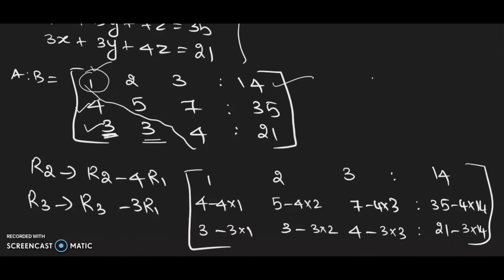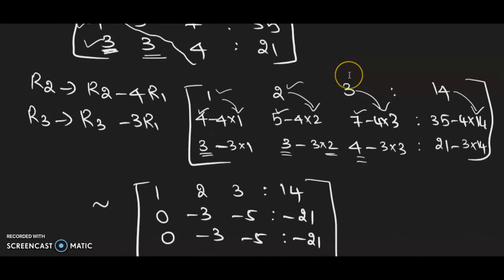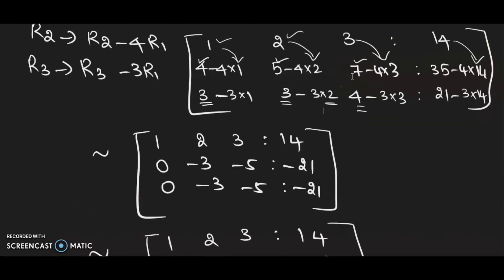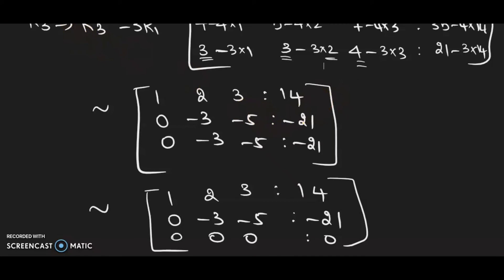Computing R2 − 4R1: take each element of R2, which is [4, 5, 7], minus 4 times each element of R1 [1, 2, 3, 14], and simplify. Similarly, compute R3 − 3R1: take R3 elements [3, 3, 3, 4] minus 3 times [1, 2, 3, 14] and simplify. After simplification, you can see that the resulting rows 2 and 3 have the same values: [−3, −5, −21] in the coefficient part.